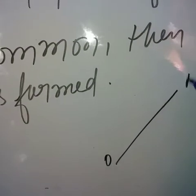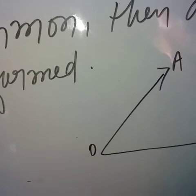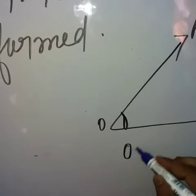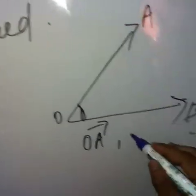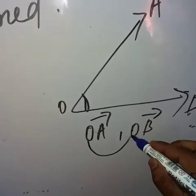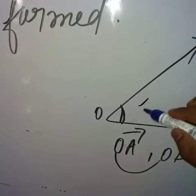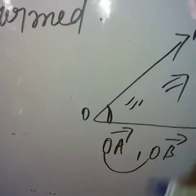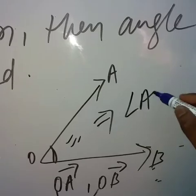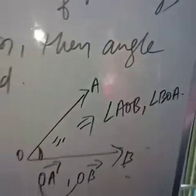OA is a ray and OB is also a ray. They make a common point at O. Then an angle is formed at O point. We write it in the form of angle AOB or angle BOA.